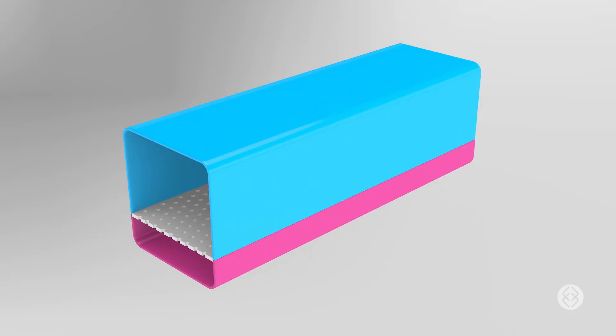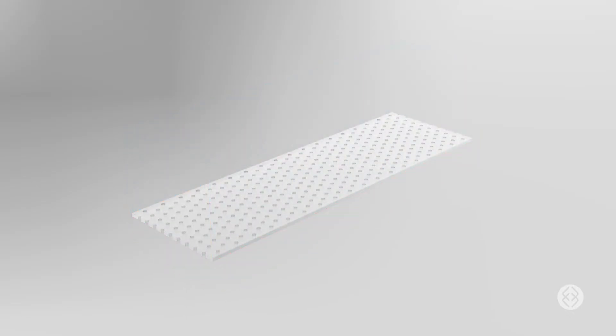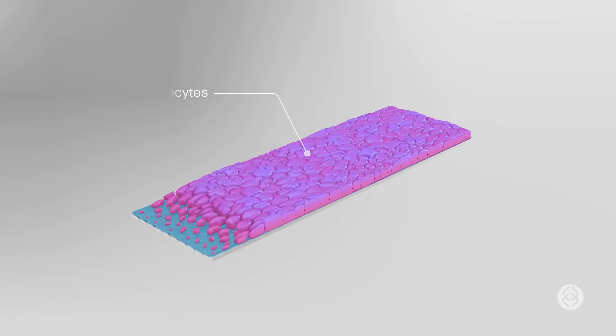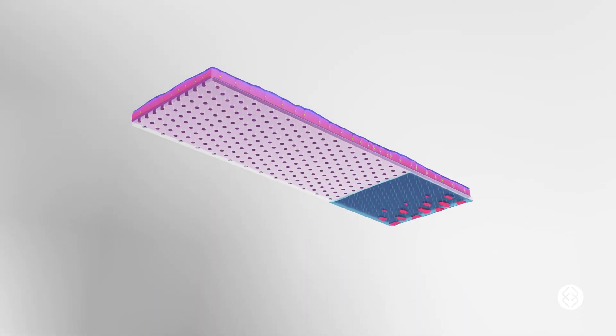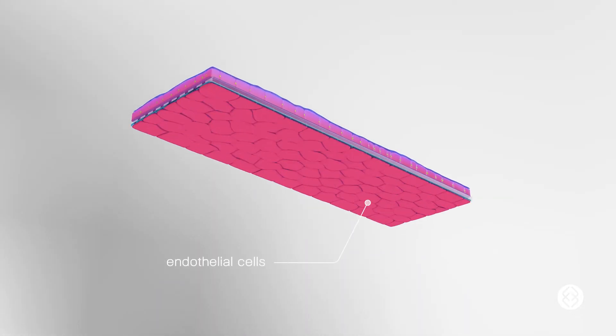It contains two fluidic channels that are separated by a porous stretchable membrane. The top side of the membrane is covered with hepatocytes. The bottom side of the membrane is lined with liver-specific endothelial cells.